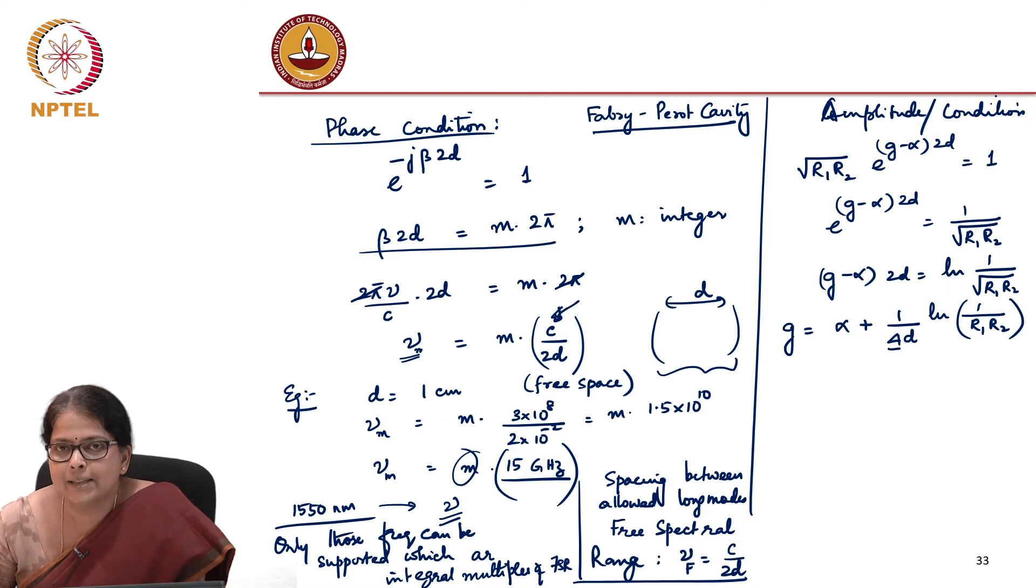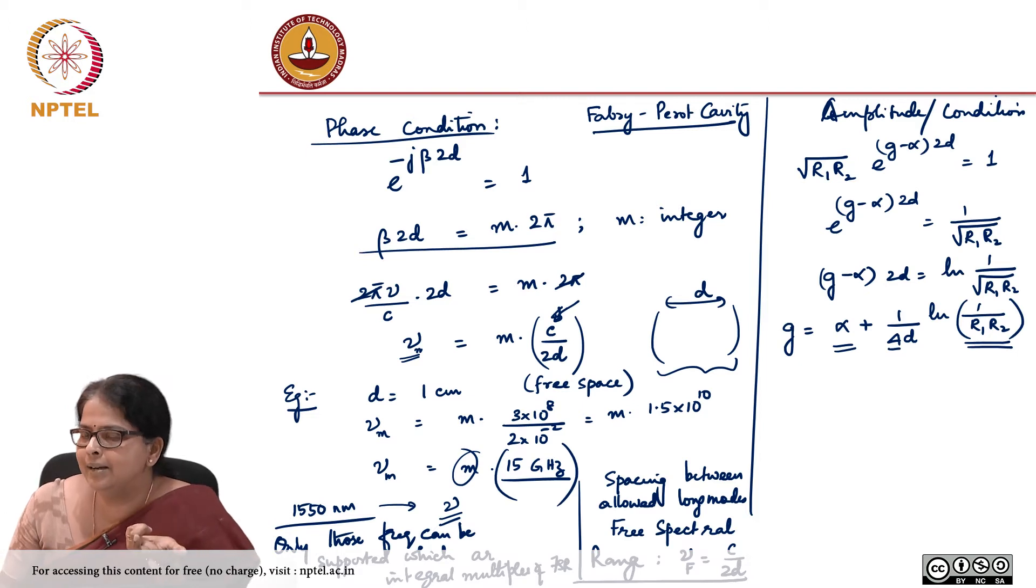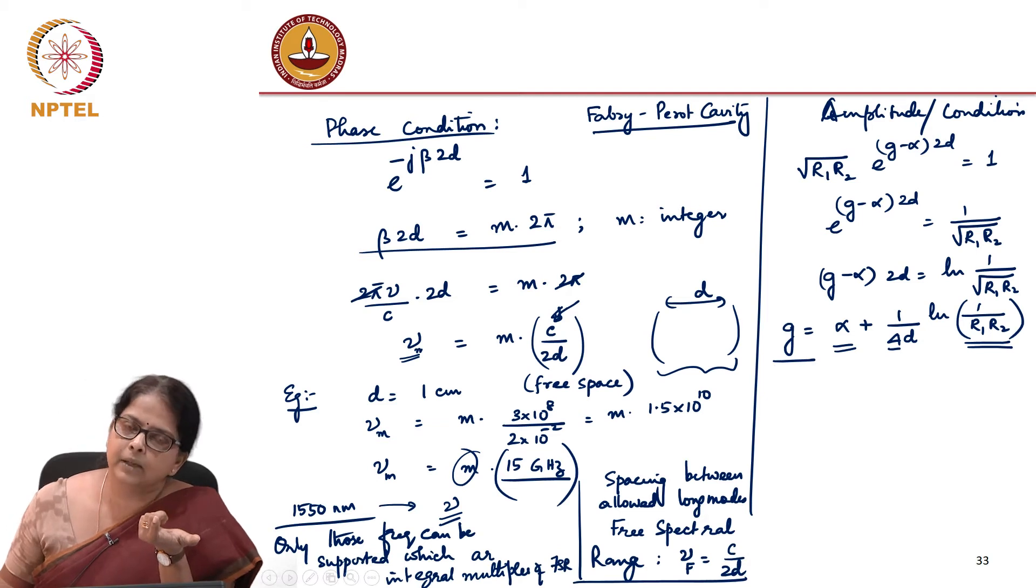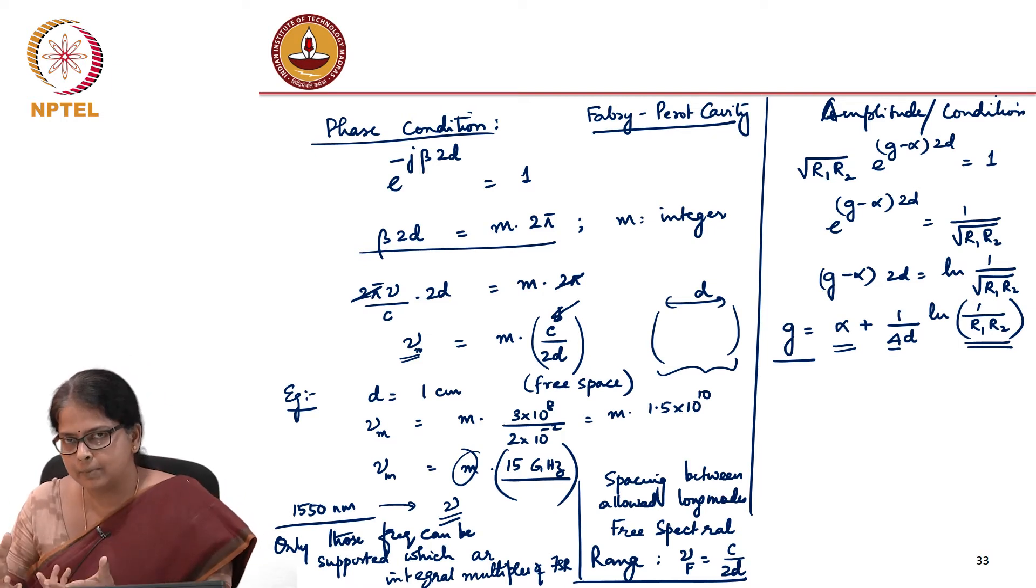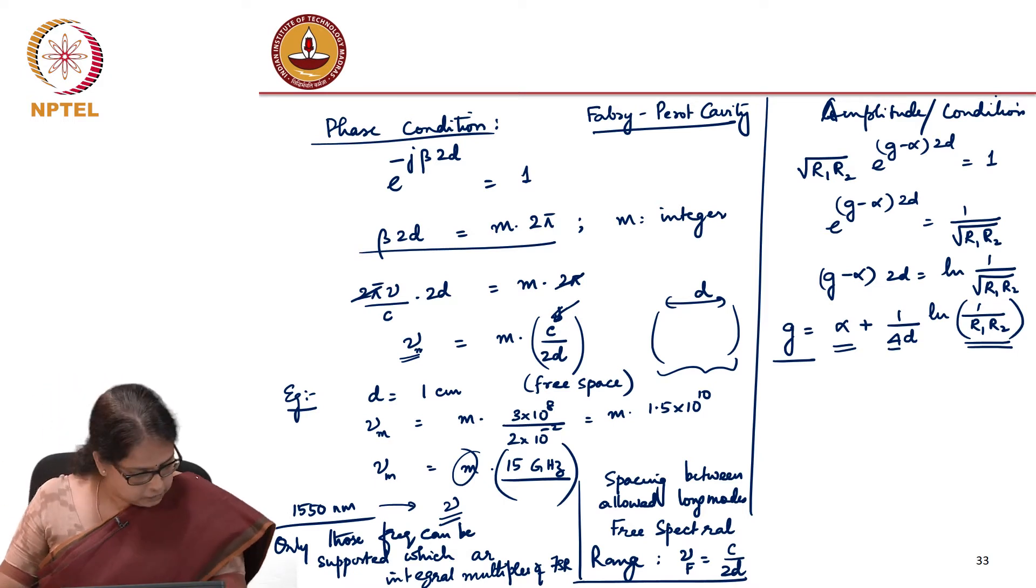This tells you that if I have a certain attenuation coefficient and if I have already assumed certain reflection coefficients for the mirror, the minimum gain that I need in my gain medium is already fixed. Or in other words, I can turn it around and say that if I know the gain coefficient available in this medium is this much, I can now decide what is the reflectivity that I can use in the mirror.